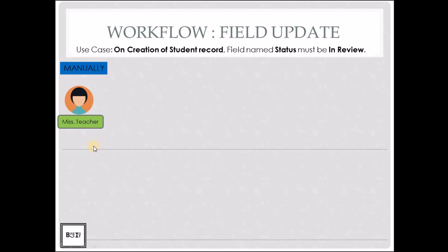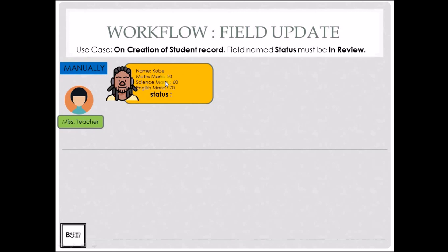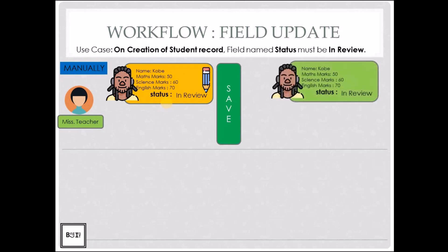Now let's understand what a workflow field update is using an example. Let's say in a school, on creation of a student record, there is a field called status on the student object which must always be set to 'in review'. Ms. Teacher is creating a student record for Kobe and fills out fields like math marks, science marks, and English marks. She sets the status field to 'in review' as instructed and clicks save, which saves the record with status 'in review'.